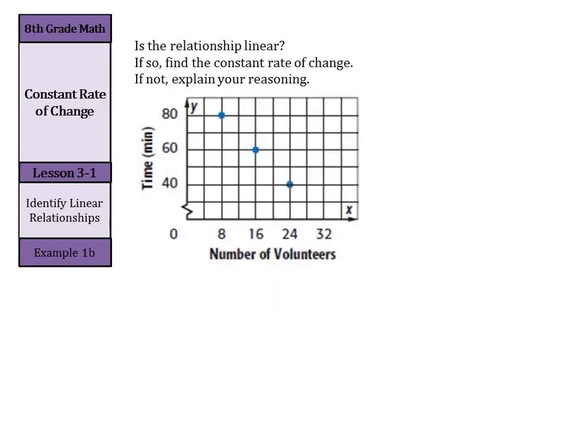Let's continue on. Is the relationship linear? If so, find the constant rate of change. If not, explain our reasoning. Well, the first step I would do when you're given the graph, it looks linear. It certainly looks like I could draw the line here. But we do need to make a table and do some calculations.